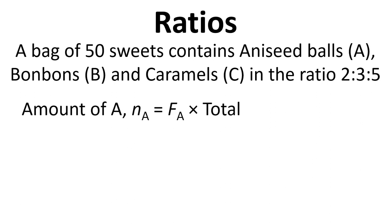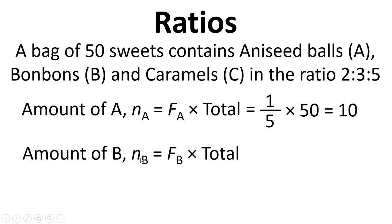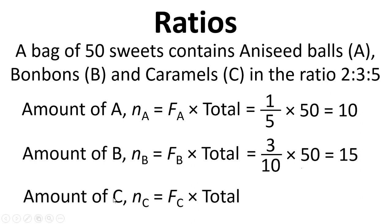So the amount of A, so the number of A is the fraction times the total, so a fifth times fifty is ten. The amount of B is the fraction of B times the total, so three over ten times fifty that's fifteen. The amount of C is the fraction times the total, so this time it's twenty-five.